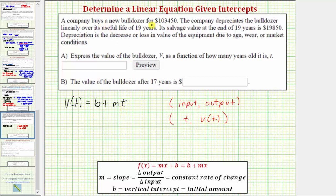So, brand new, the bulldozer costs $103,450, which means as an ordered pair, this would be 0, comma, 103,450. And then, we're told, after 19 years, the value is $19,850. So, the ordered pair would be 19, comma, 19,850.